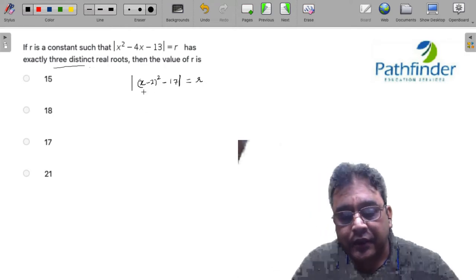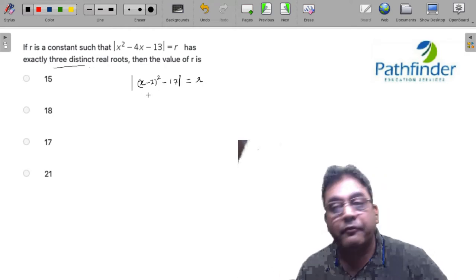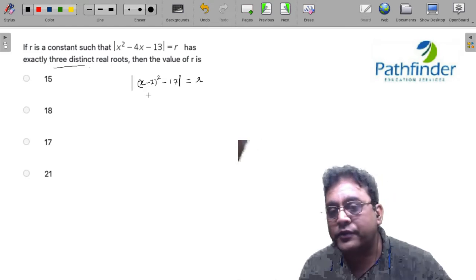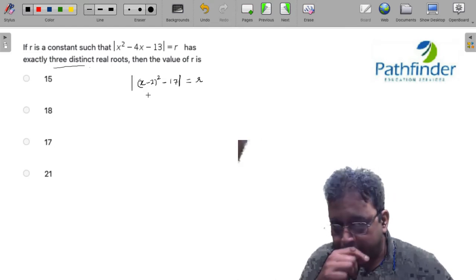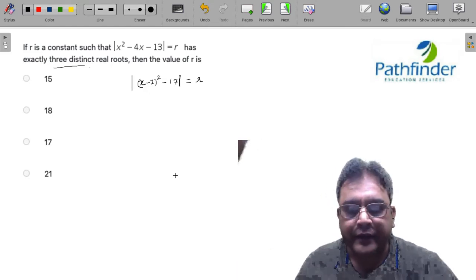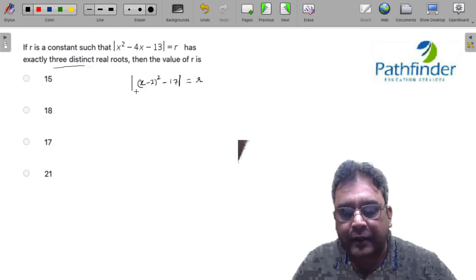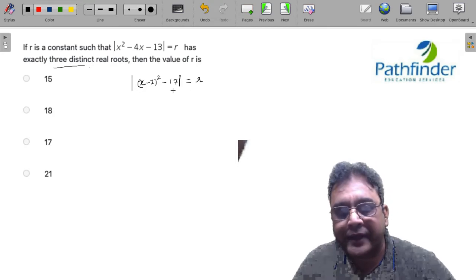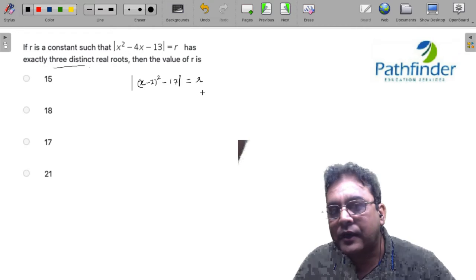Therefore, I have rewritten this as |(x - 2)² - 17| = r.